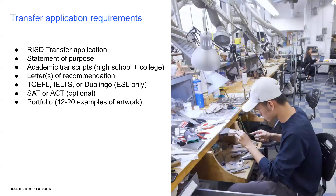All of our financial aid is need based. If you have any questions about tuition and financial aid, please reach out directly to Student Financial Services, or SFS, and they'd be happy to answer your questions. The transfer application requirements include: the RISD transfer application, your statement of purpose, academic transcripts (high school and college), at least one letter of recommendation but up to three, TOEFL/IELTS/Duolingo if English is your second language, optional SAT or ACT scores, and your portfolio — 12 to 20 examples of your best and most recent work.